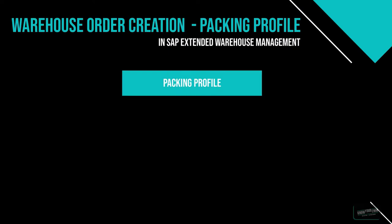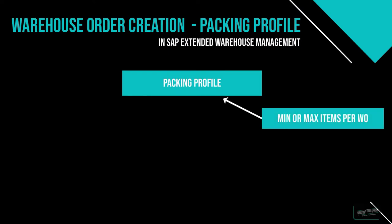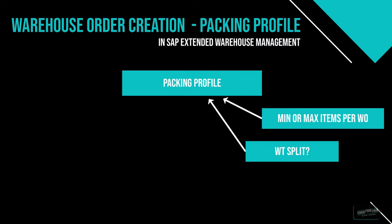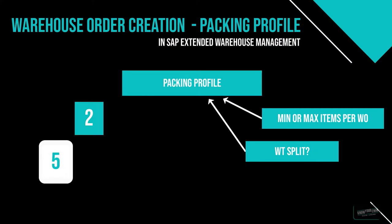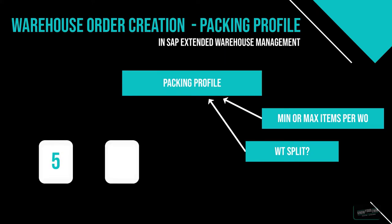The packing profile contains the following fields: minimum to maximum number of items per warehouse order; and a warehouse task split option. Setting this option allows the EWM system to split warehouse tasks so the packaging materials are filled more optimally. An example could be that the initial warehouse task creation created a stock removal task for 5 pieces. According to the packing profile, the EWM system determines that we could put 2 of those 5 pieces into an already calculated handling unit. If we allow a warehouse task split, the EWM system will reduce the quantity of the existing warehouse task to 2 pieces and create another one for the remaining quantity.